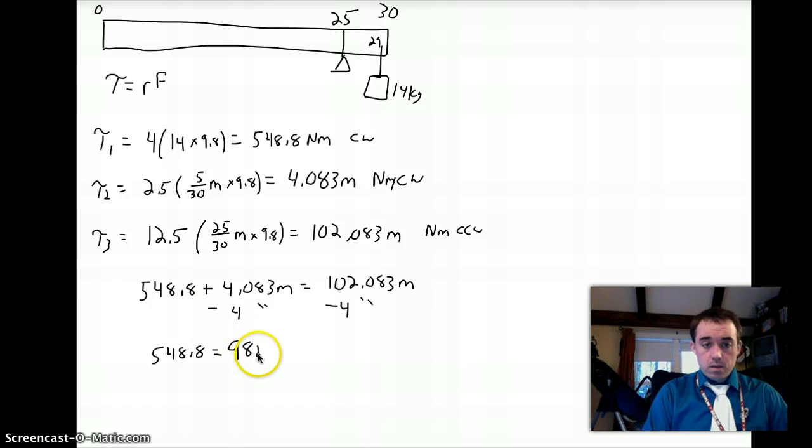Divide by 98. So M equals 548.8 over 98, which gives a nice even 5.6 kilograms.